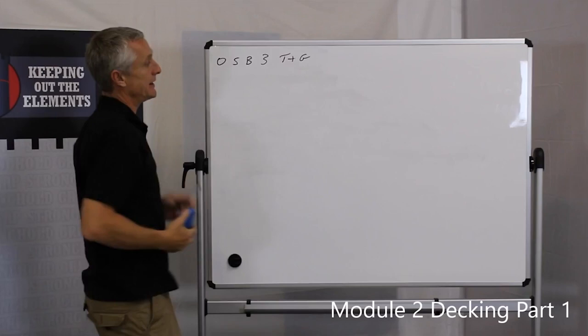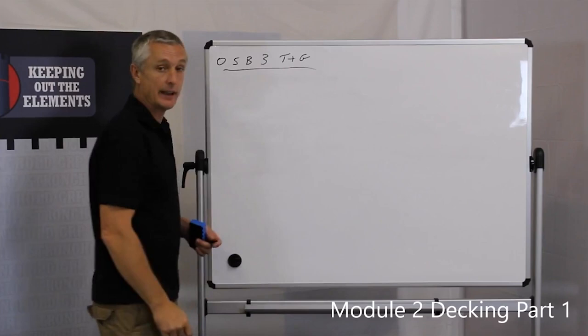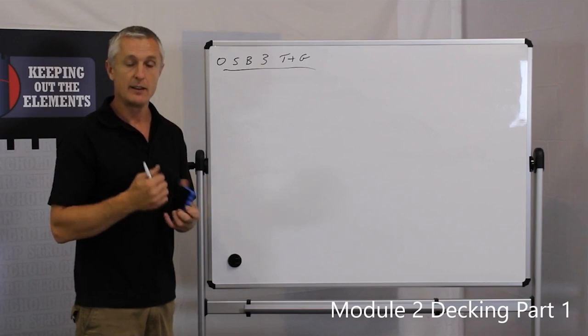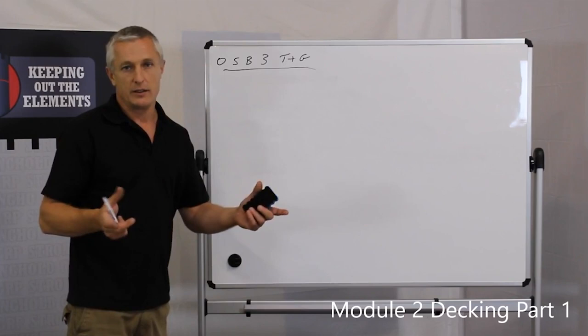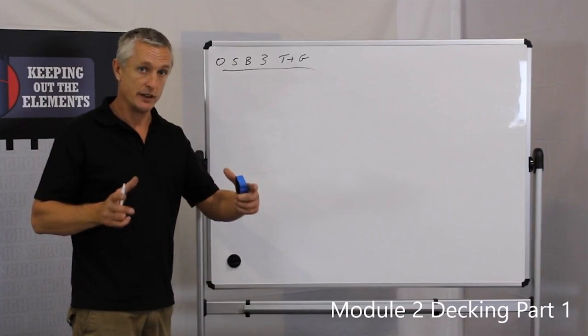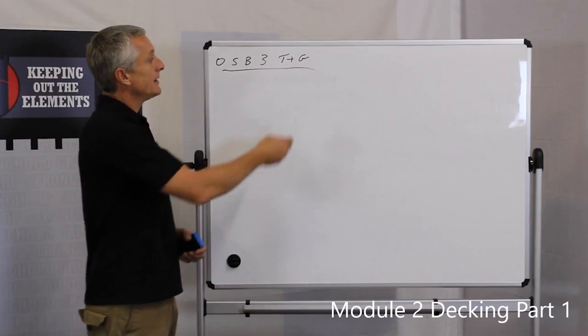we now come down to the best product to use which is OSB3 TNG. The three designation on the board means it's pre-expanded to a six or seven percent moisture content which is what it will go to if you left it in your living room or in any dry environment. It'll absorb ambient moisture and it expands, it'll take on moisture to about six or seven percent by volume and then it'll expand to its finished size. So an OSB3 is already pre-expanded.